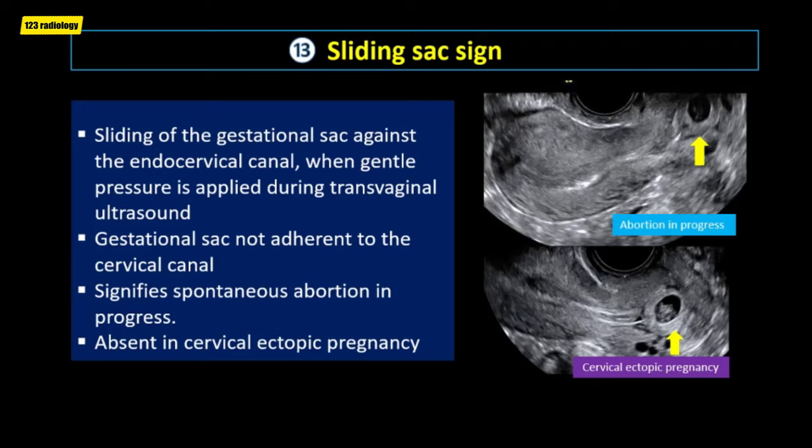The daughter cyst sign describes a small, rounded, anechoic structure within a primary cyst. It is reported to be pathognomonic for ovarian cysts. Although not sensitive, the daughter cyst sign can be considered highly predictive of the ovarian origin of female fetal intra-abdominal cysts.